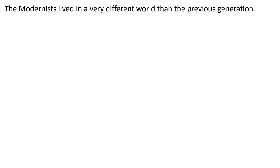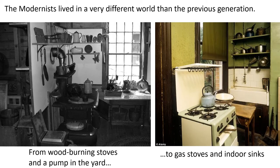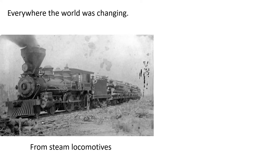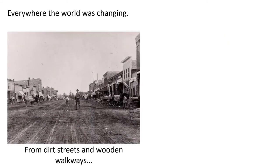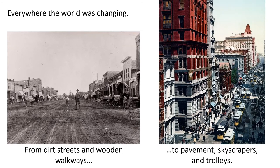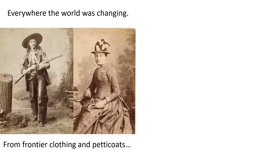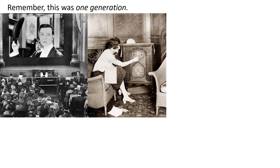Modernists lived in a very different world than their previous generation — from wood-burning stoves and a pump in the yard, to gas stoves and indoor sinks, from wagons to cars, from steam locomotives to electric diesel, from dirt streets and wooden walkways to pavement, skyscrapers, trolleys, from frontier clothing and petticoats to flapper styles and business suits. Remember, this was one generation.